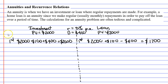This comes out to $2,500. What we notice with our investment is it increases — it goes beyond the $2,000. For our loan, it decreases down to $1,700. This is a loan — we're trying to pay it off.